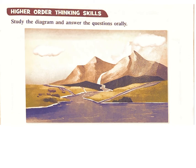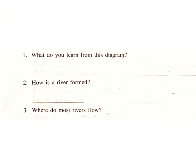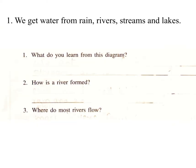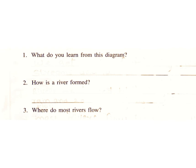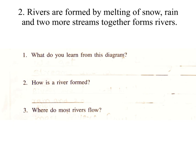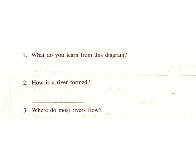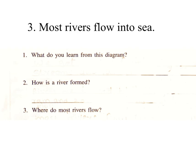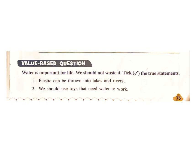Higher-order thinking skills: Study the diagram and answer the questions orally. 1. What do you learn from this diagram? Answer: We get water from rain, rivers, streams, and lakes. 2. How is a river formed? Answer: Rivers are formed by the melting of snow and rain, and when two or more streams join together. 3. Where do most rivers flow? Answer: Most rivers flow into the sea.